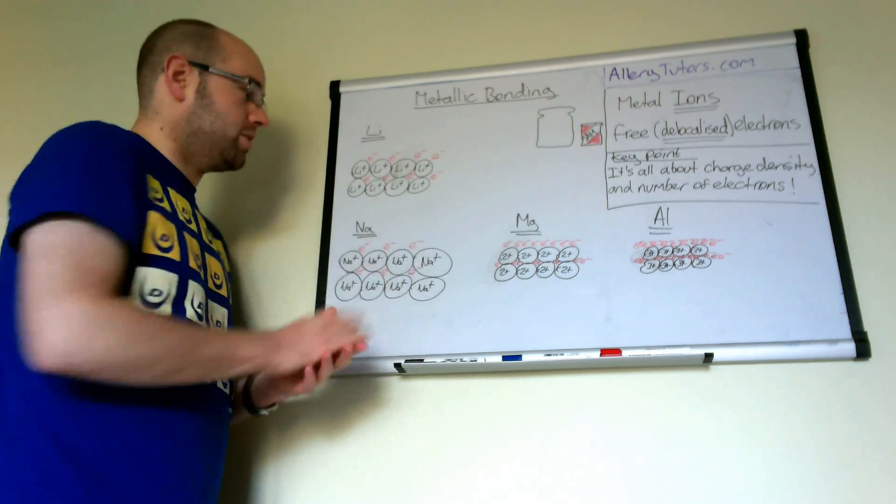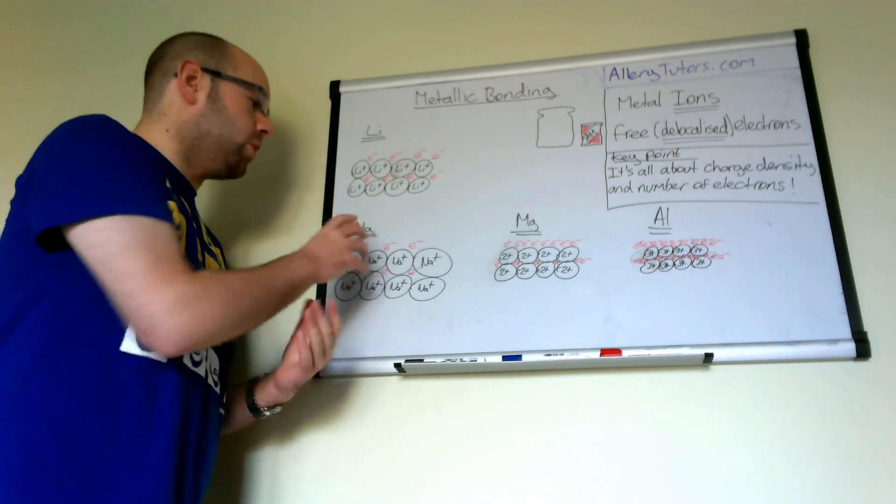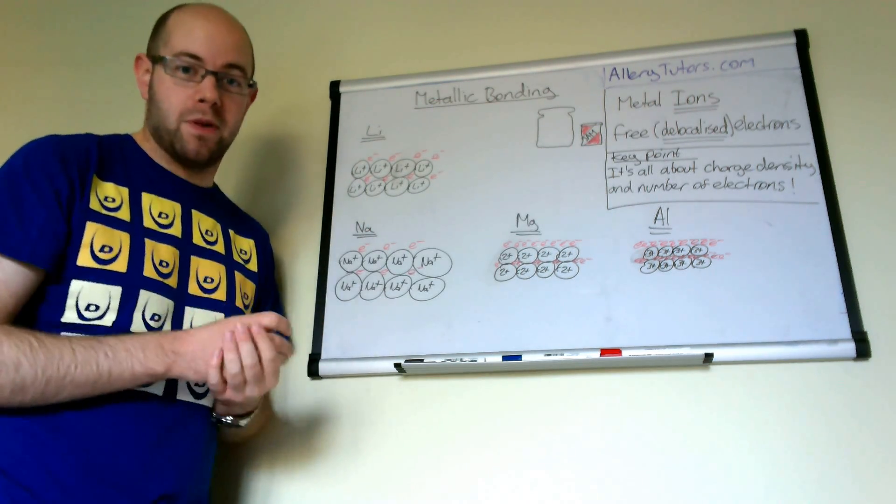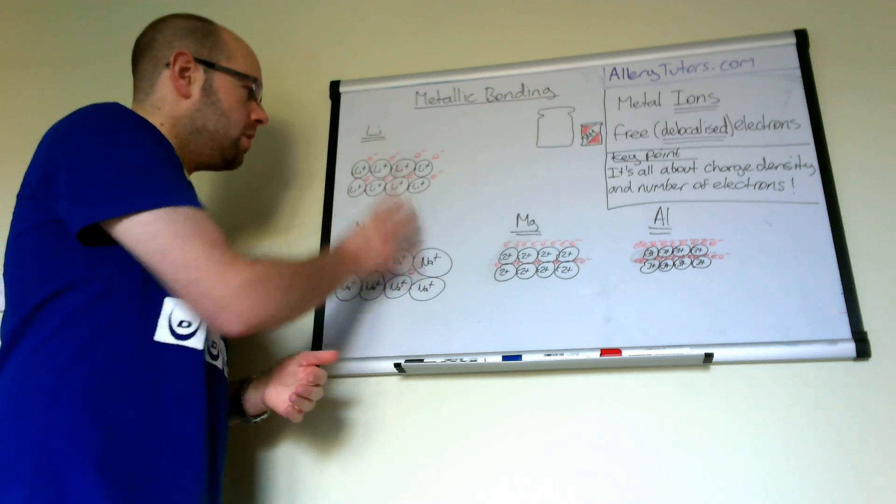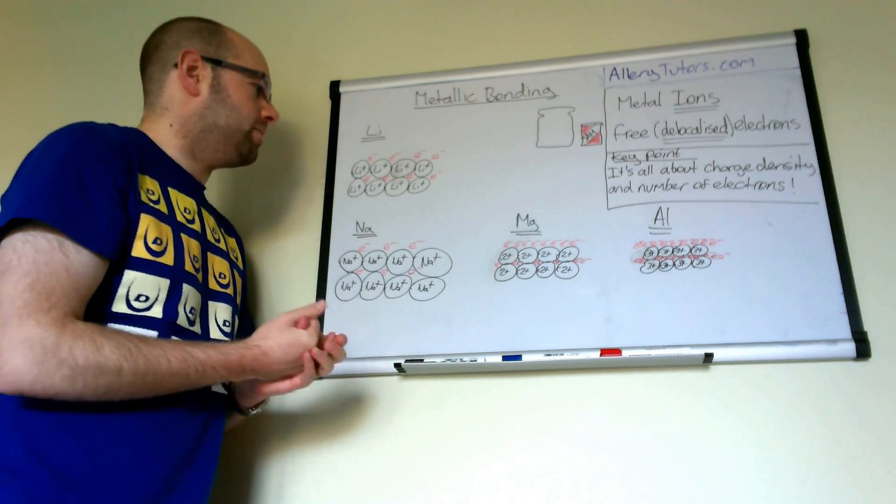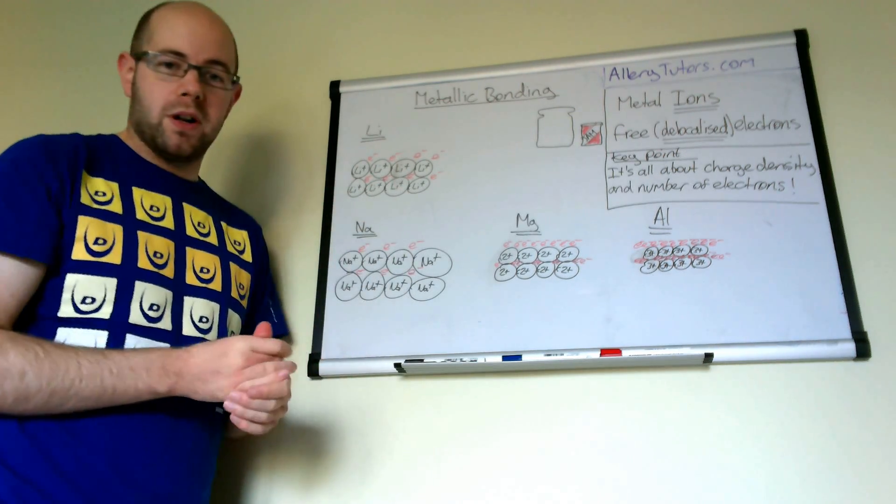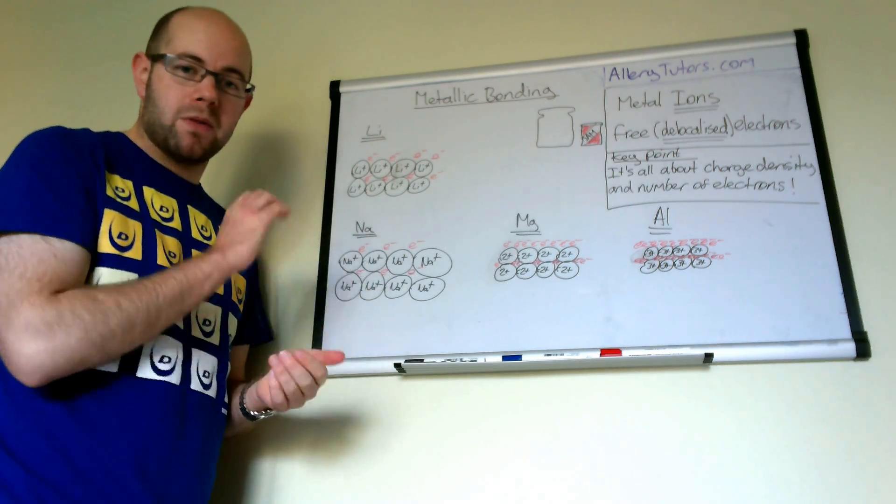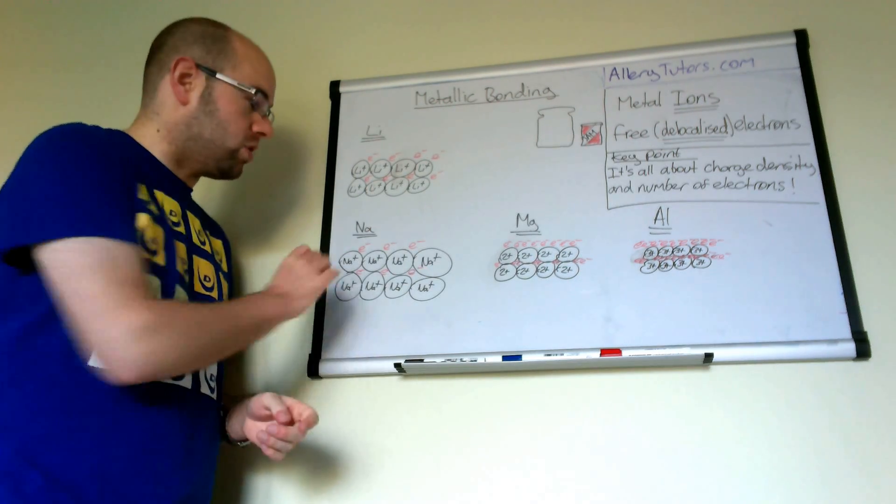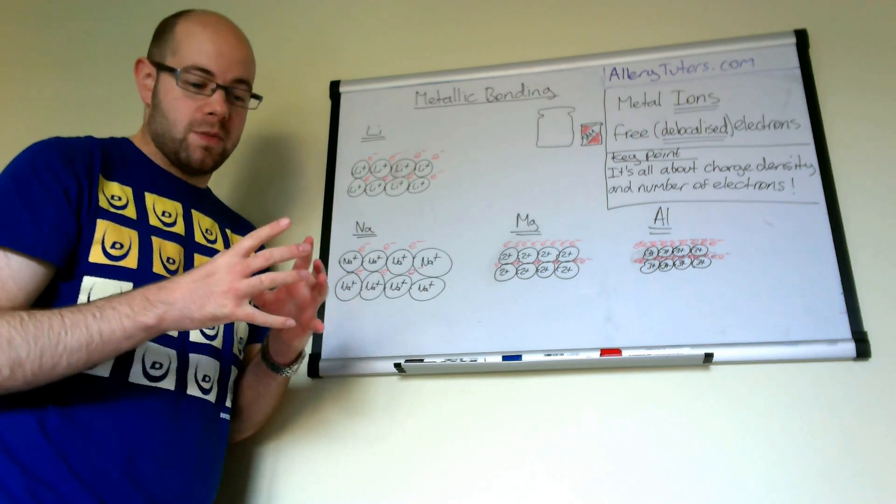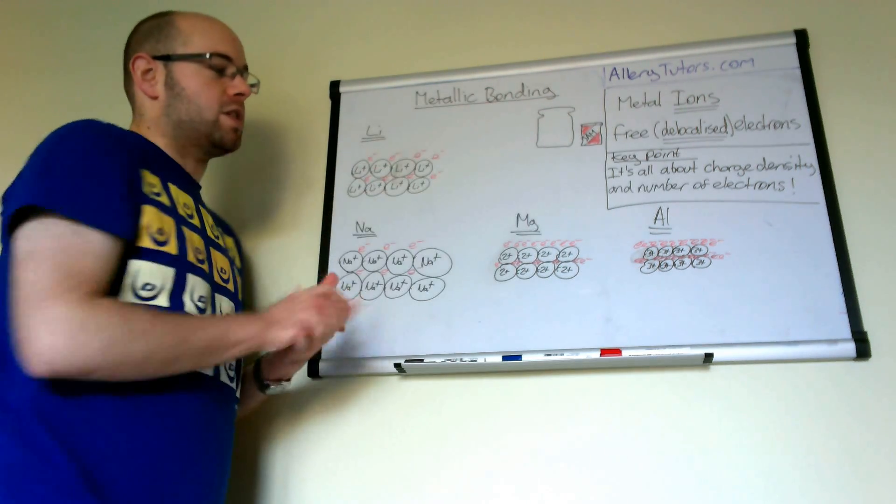Both metals produce positive ions, and both can only give up one electron to form a delocalised electron cloud. They give up the same amount, but sodium is softer because it can only give up the same electrons, but those electrons have to be spread over a larger area because the sodium ion is bigger than the lithium ion.